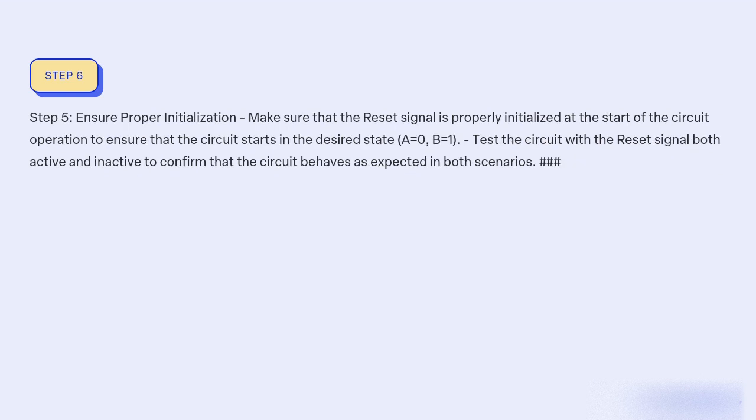Step 5: Ensure proper initialization. Make sure that the reset signal is properly initialized at the start of the circuit operation to ensure that the circuit starts in the desired state A=0, B=1. Test the circuit with the reset signal both active and inactive to confirm that the circuit behaves as expected in both scenarios.